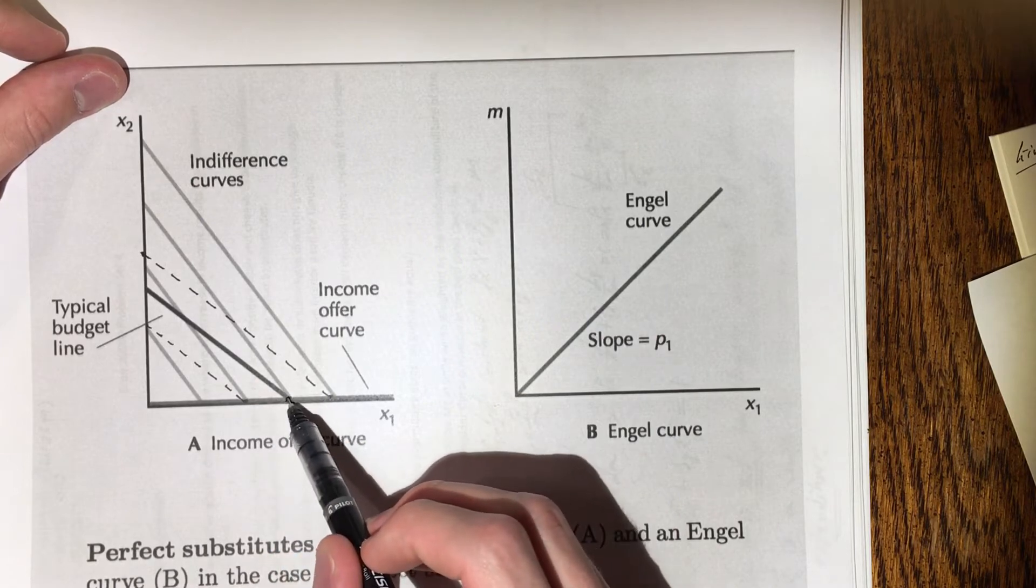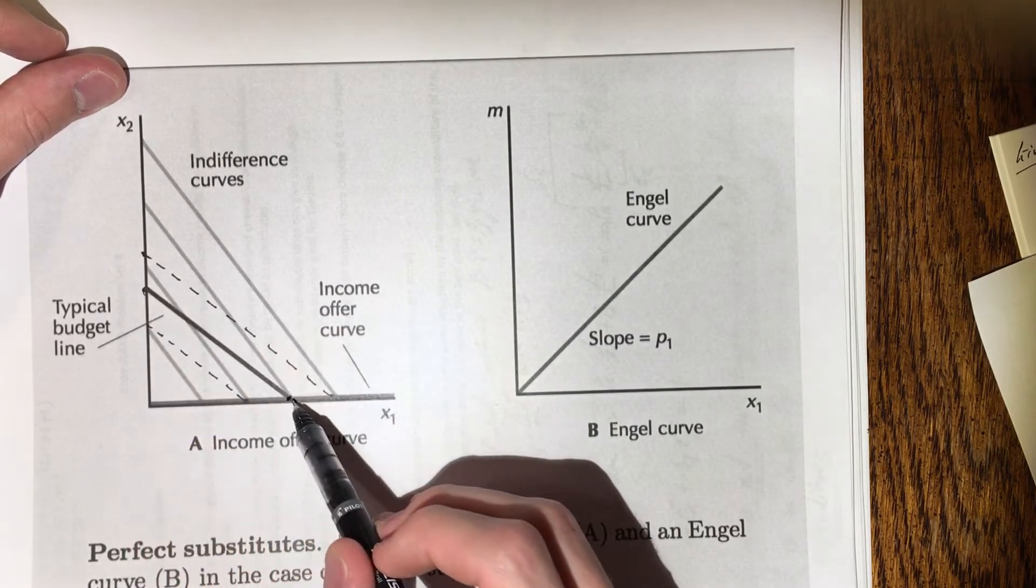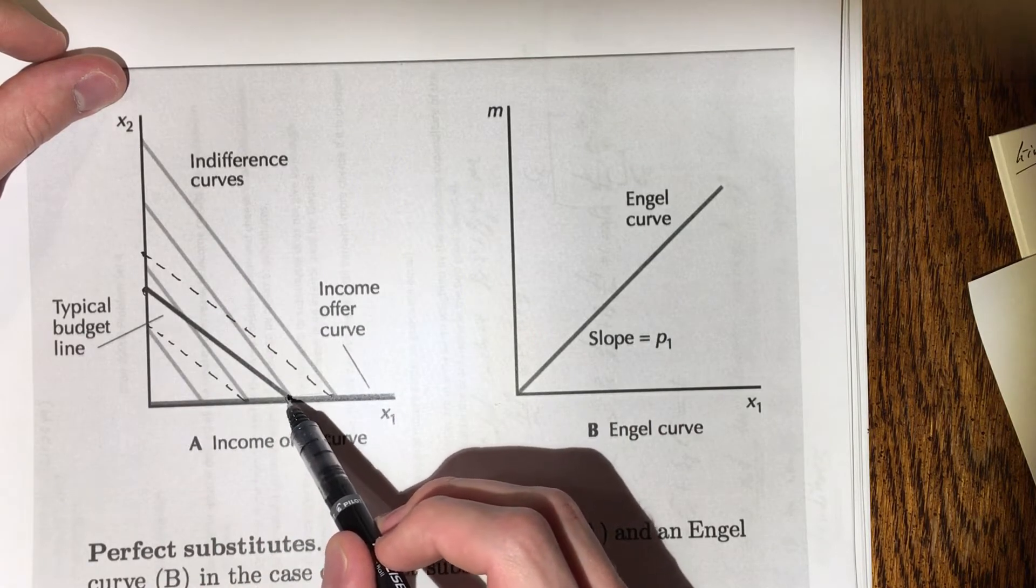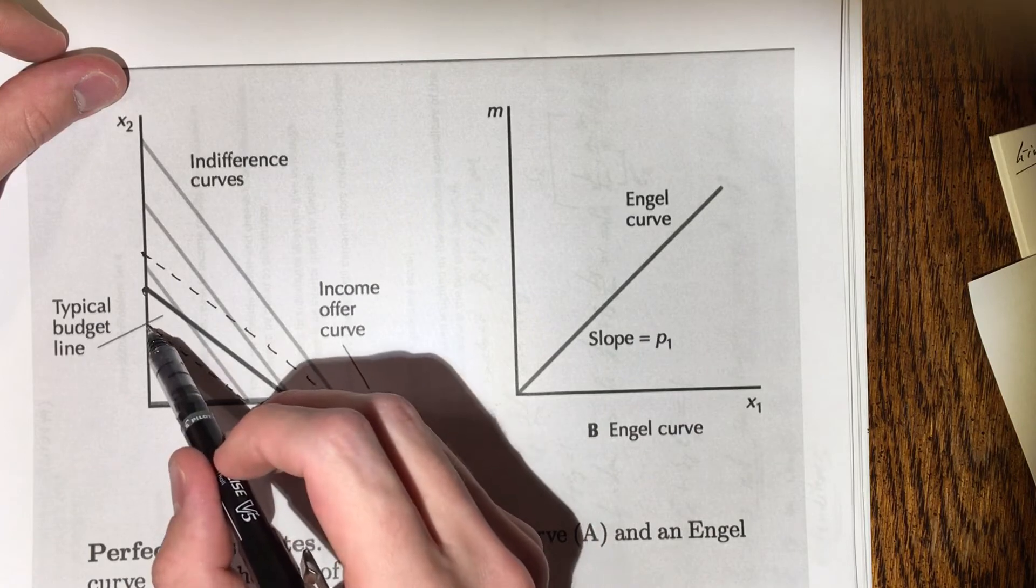In fact, the case is the same for the budget lines that I've drawn below and above. So take this budget line here with a lower m. It intersects the x-axis here, so we know this is where the optimal bundle is.